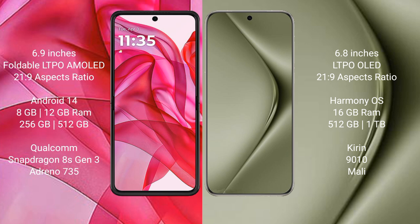The Motorola RAZR 50 Ultra runs on Android 14 operating system, while the Huawei Pura 70 Ultra runs on HarmonyOS. The Motorola RAZR 50 Ultra comes with 8GB or 12GB RAM and 256GB or 512GB internal storage.